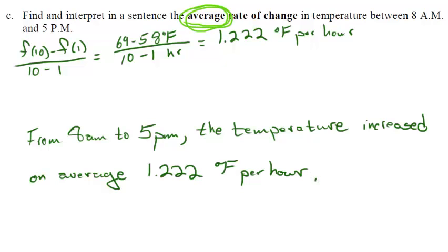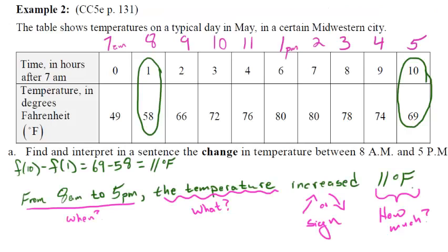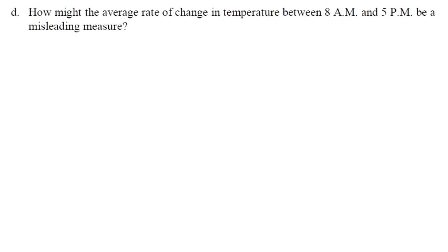Looking back at the actual data, the temperature increased for several hours, stayed the same, then started to decrease. This is why the average rate of change can be misleading — it only looks at those two endpoints, giving the net change. It gives no indication that the temperature decreased during part of the interval.